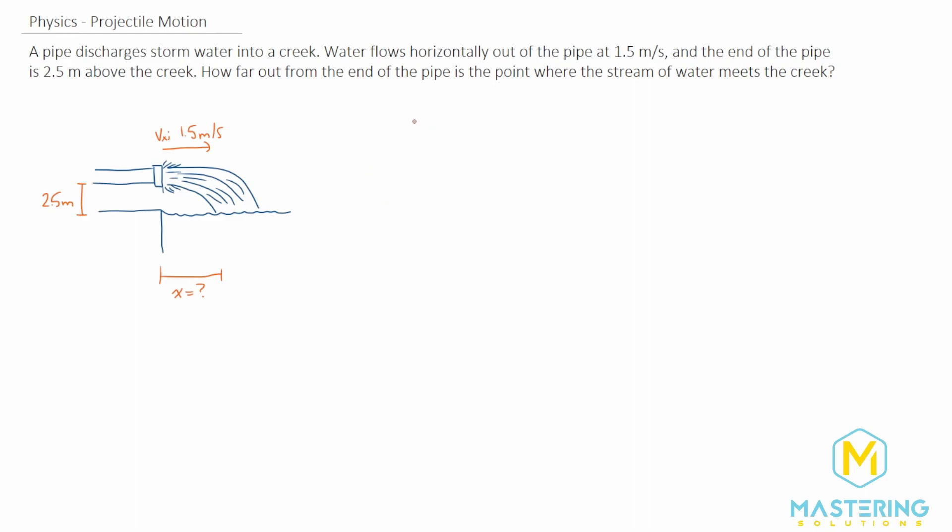The pattern that we're going to use to solve for this is: first, we need to figure out how long is the water in the air, and then we need to figure out what is the distance that it went. To solve for the time, we're going to look at the y component only and use the kinematic equation: y final equals y initial plus the initial velocity in the y direction times the time plus one-half the acceleration times the time squared.